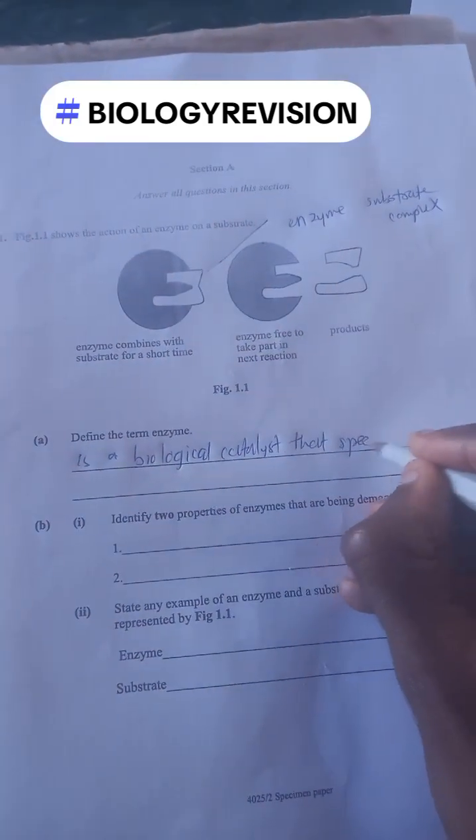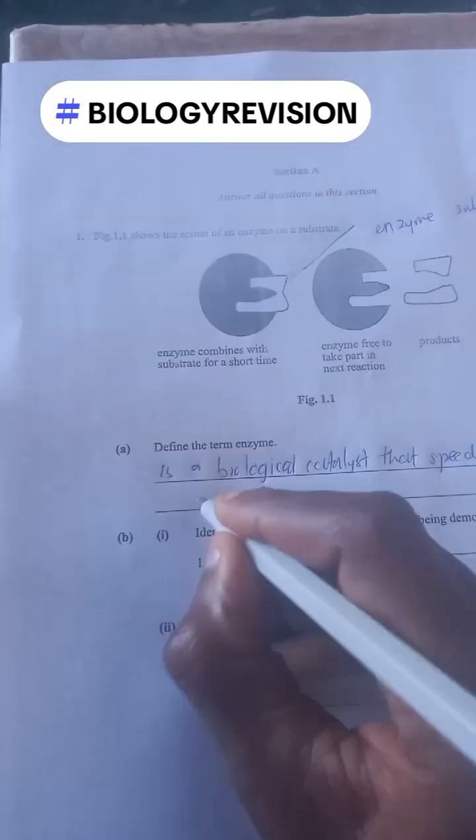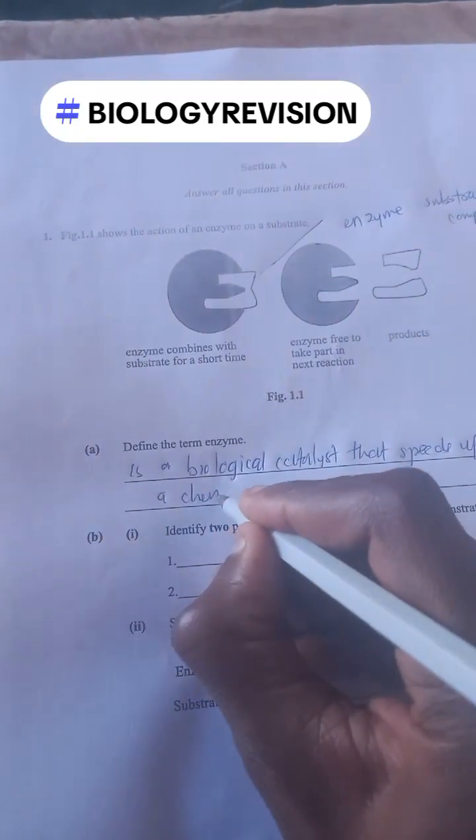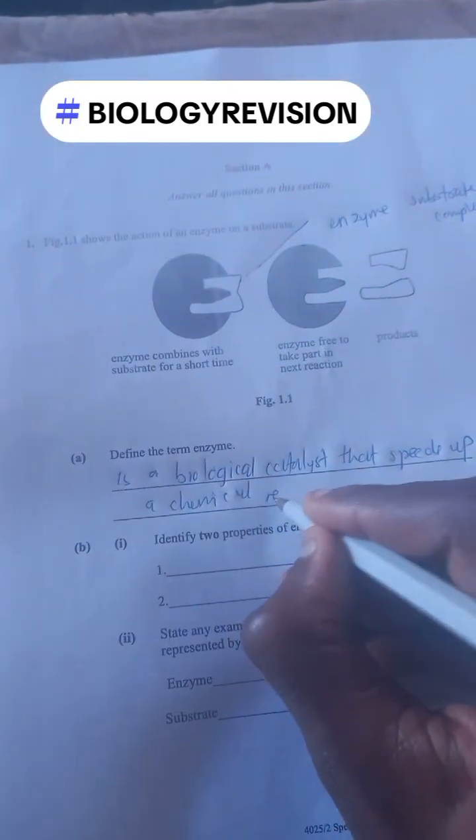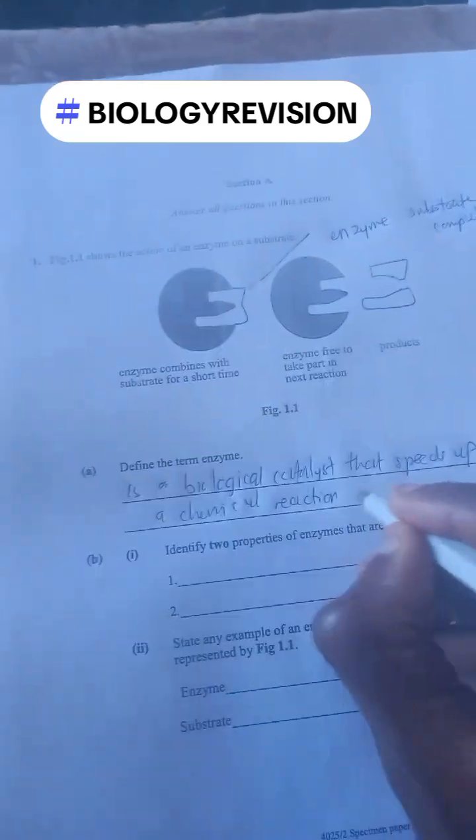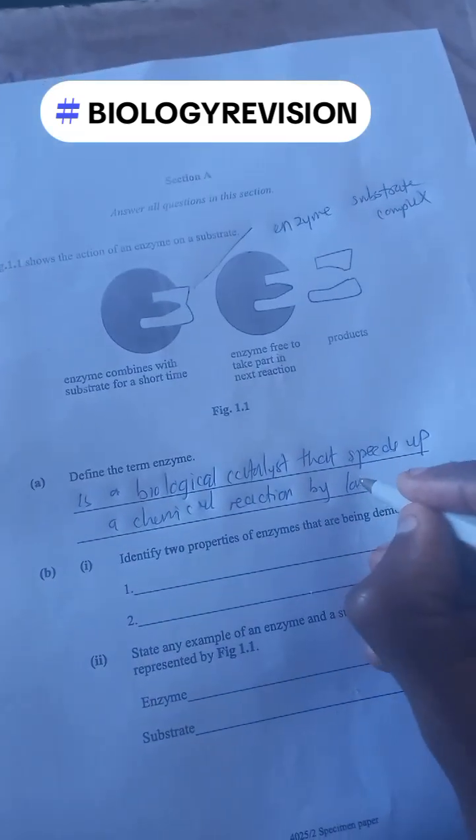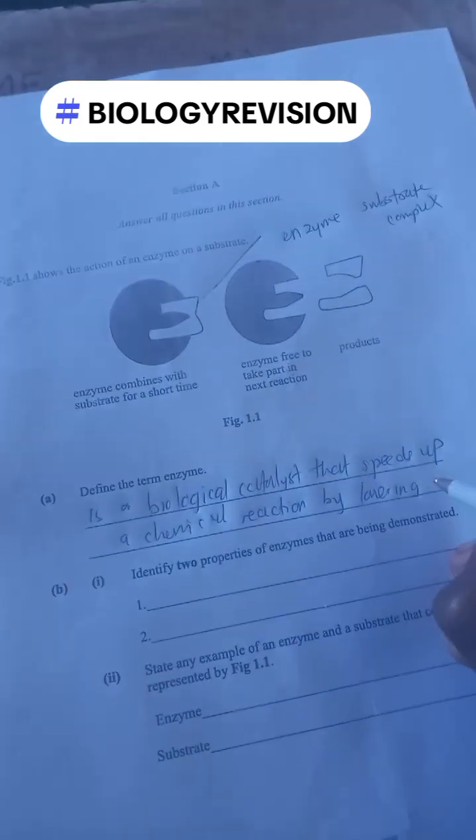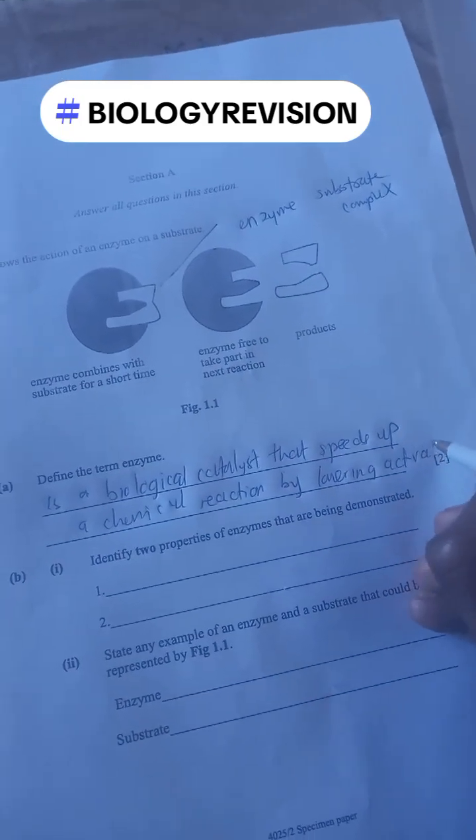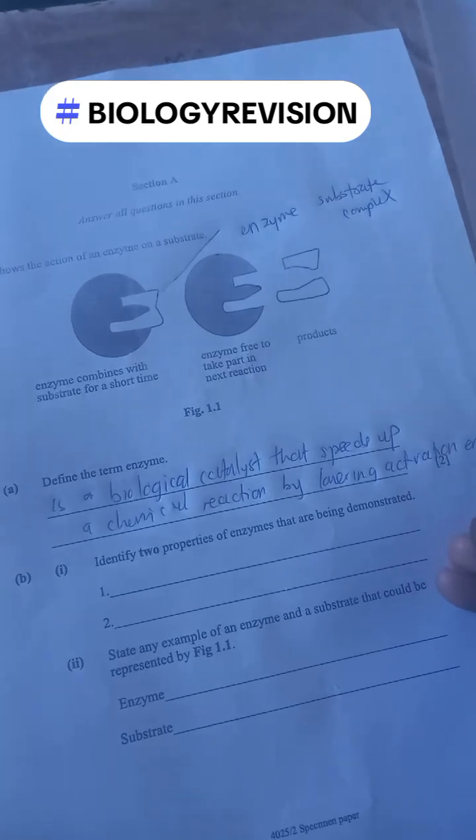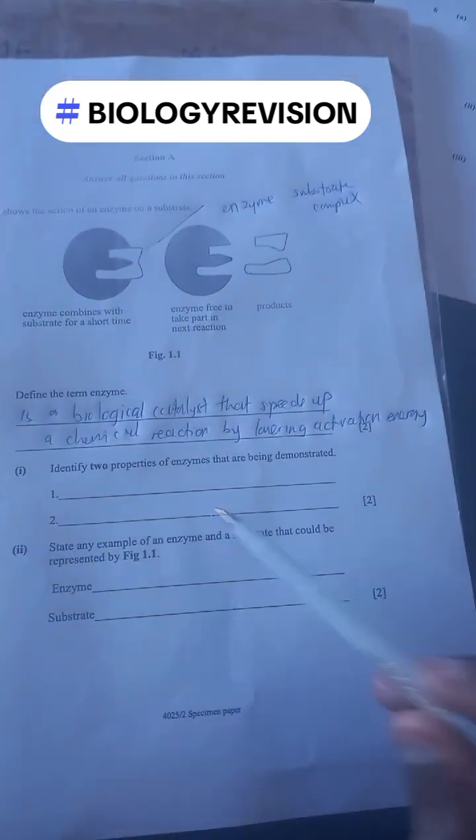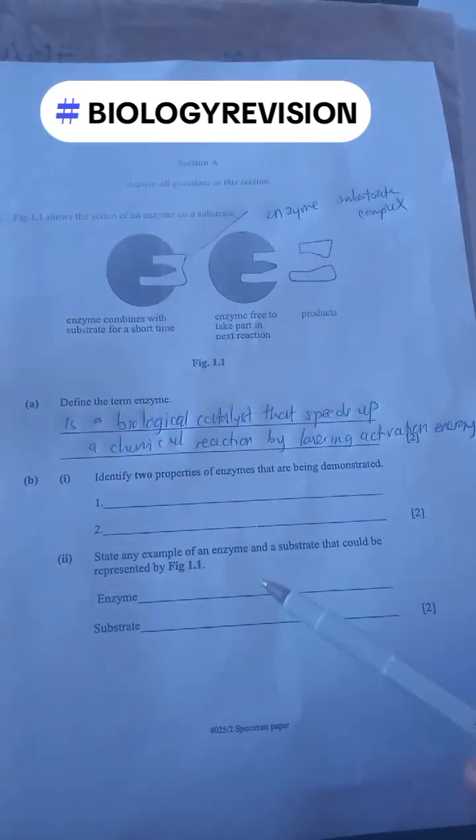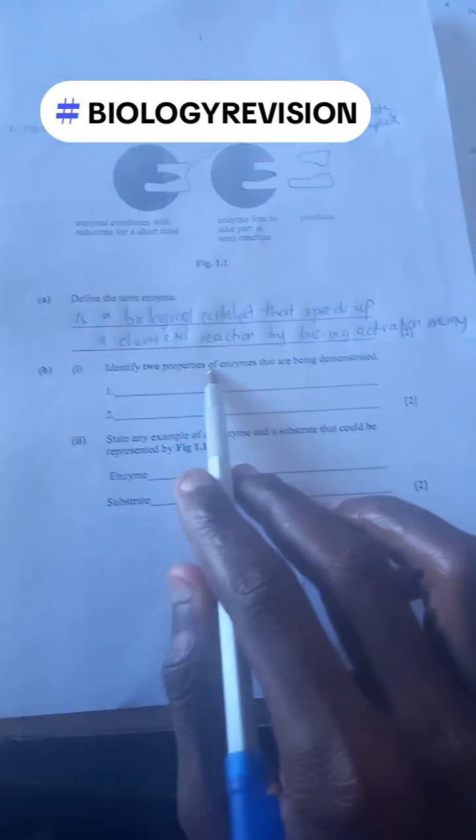So an enzyme is a biological catalyst that speeds up a chemical reaction by lowering activation energy. Activation energy is the minimum amount of energy required to start a chemical reaction.